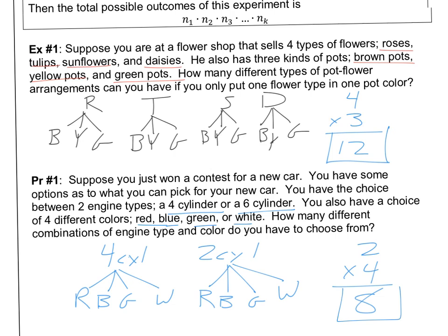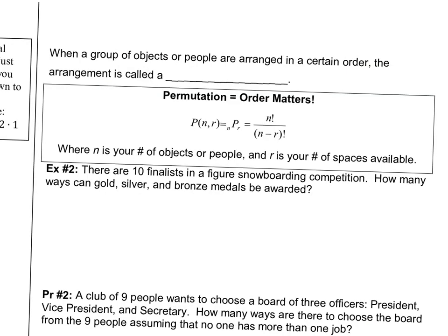All right, let's go to the next page. Now, when a group of objects or people have to be arranged in a certain order — if order matters — that arrangement is called a permutation. So permutation has to do with order. A way to remember this: O is right next to P in the alphabet, so when order matters, it's a permutation.